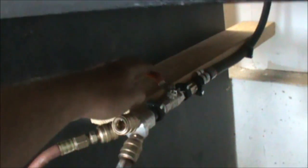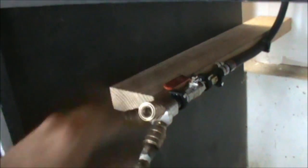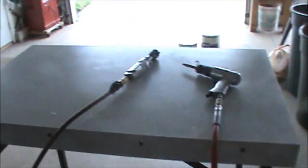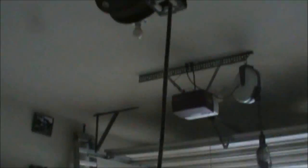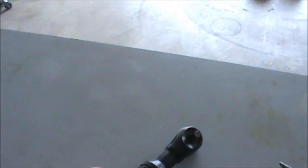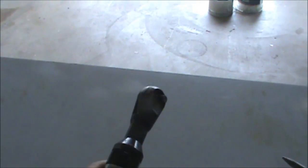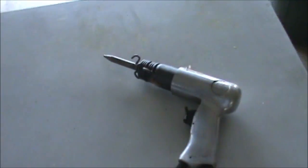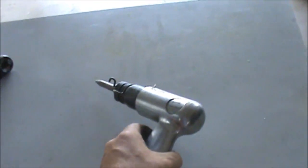And we'll turn on our air pressure and we should be able to work two devices. So if we take a look over at the table, coming down from the ceiling we have the impact, seems to be working, and over here is an air chisel.